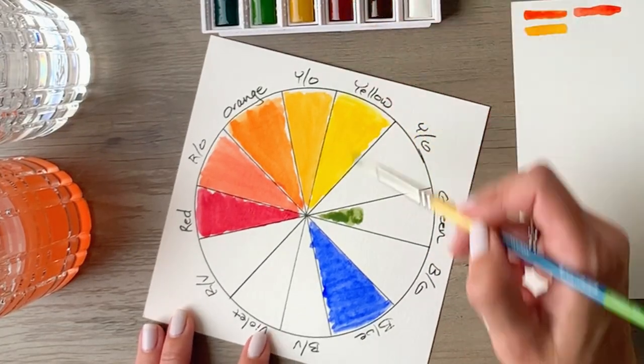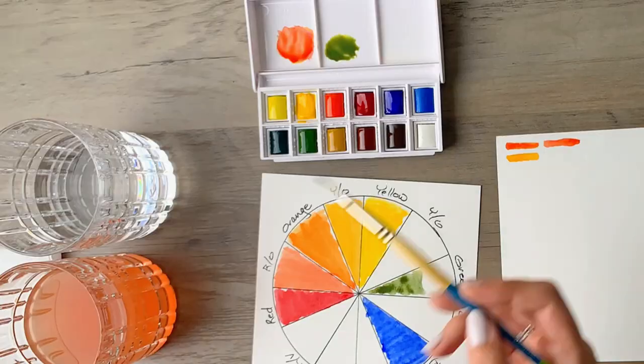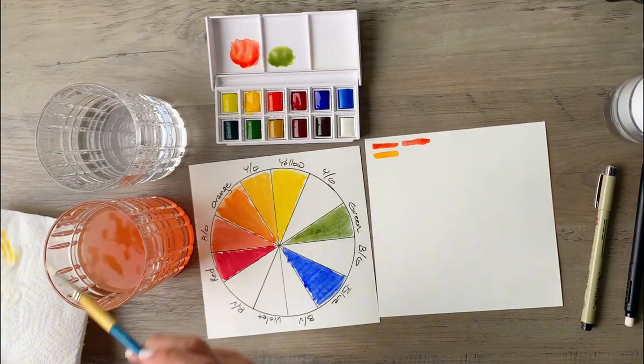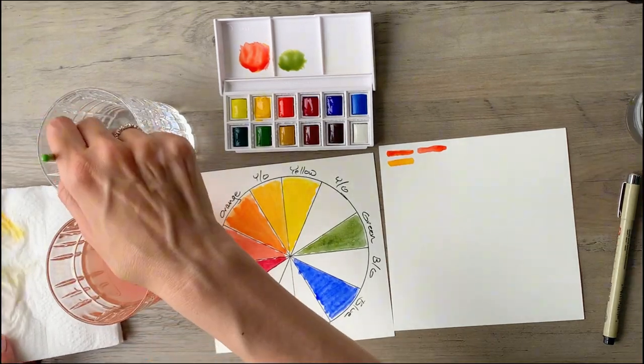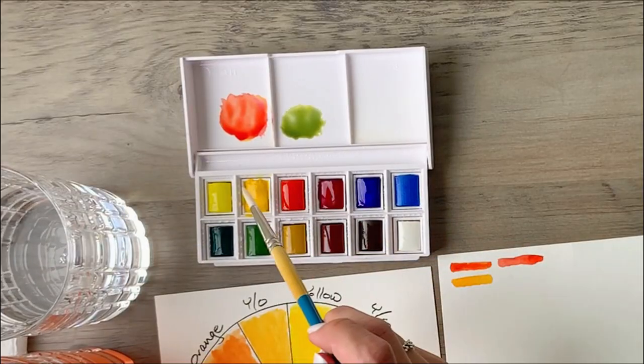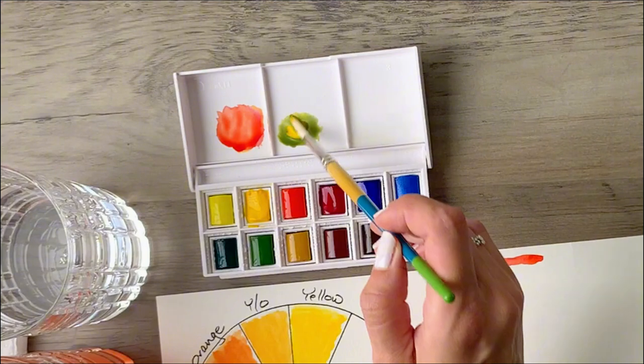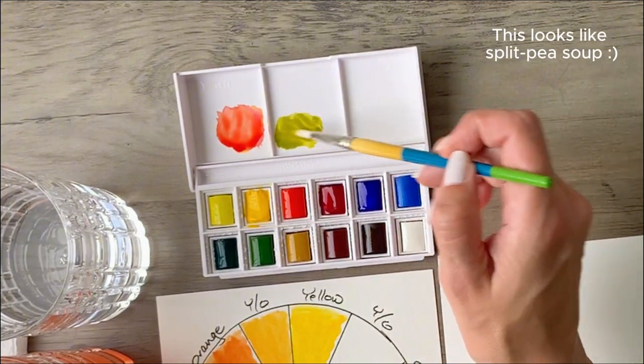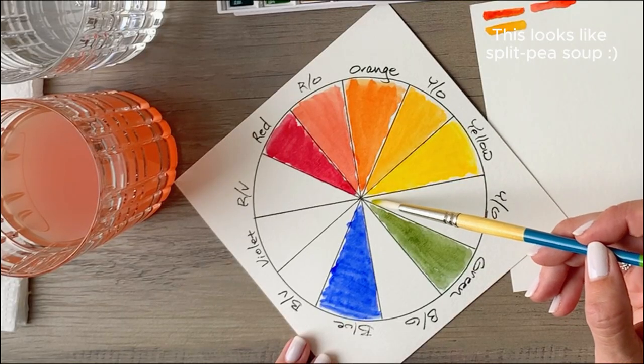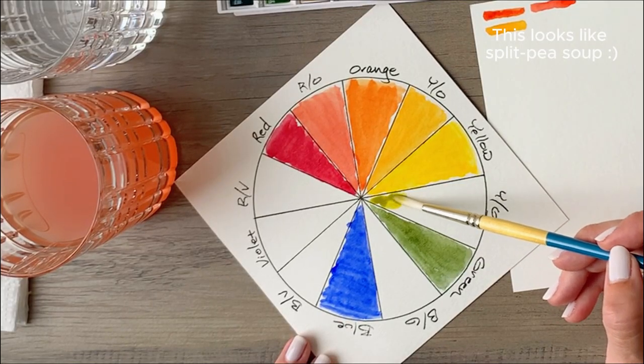As a general rule, the more water you add to your mix, the lighter the color will be and the less water that you have, the darker the mix will be. Now you'll rinse your brush off again and we're going to add a little bit more yellow to that green mixture and that'll give us a yellow green and you'll place that between the yellow and the green on your color wheel.